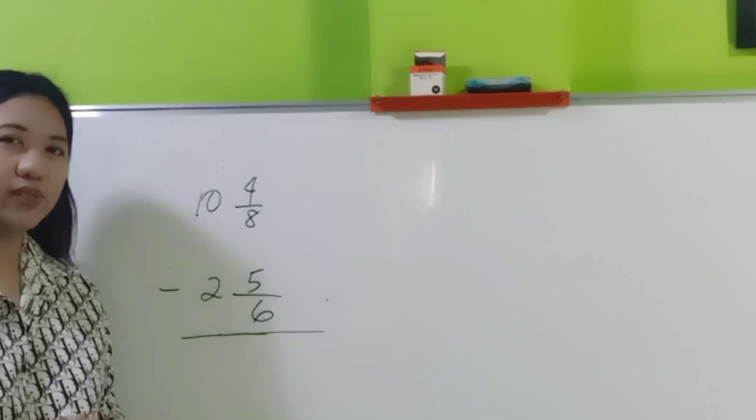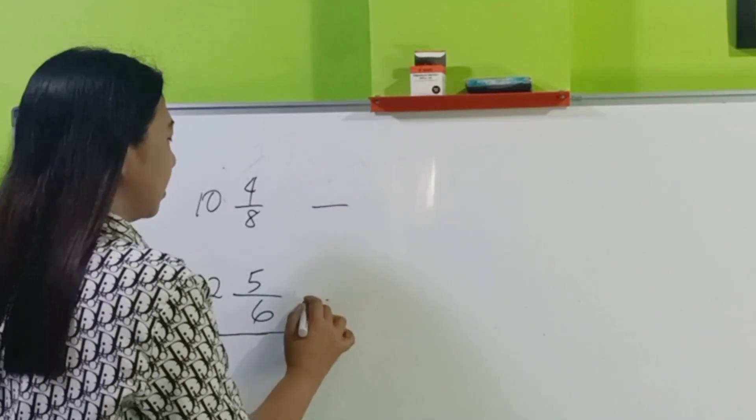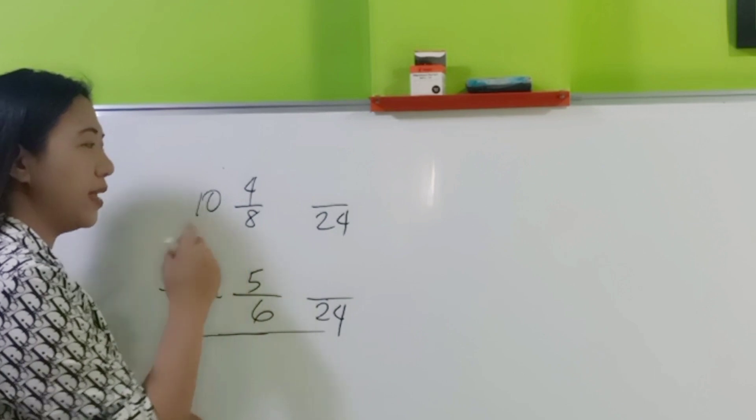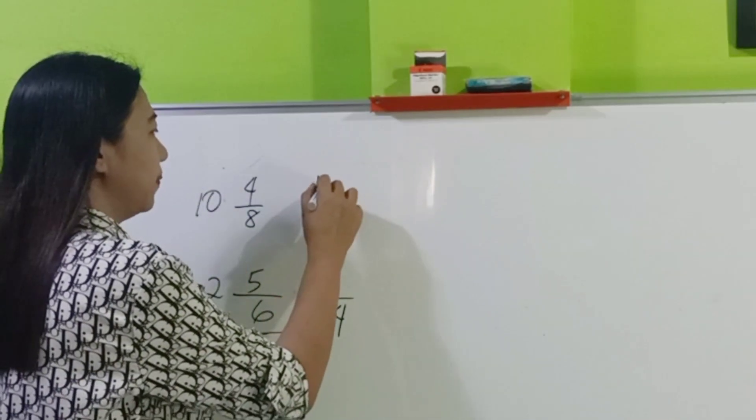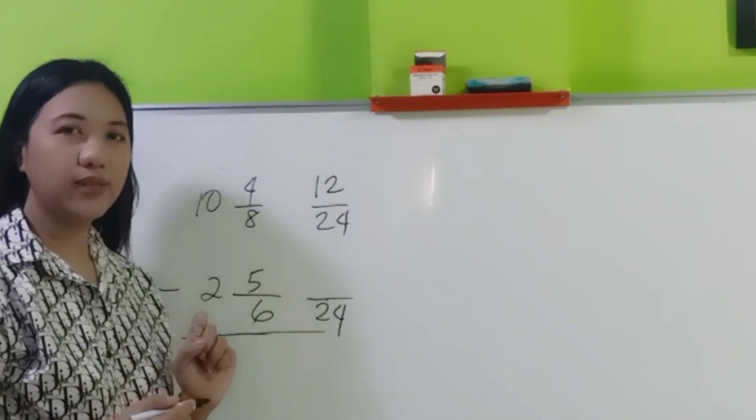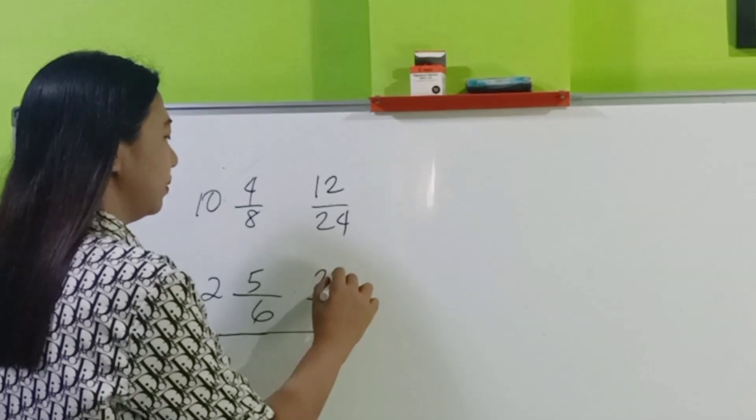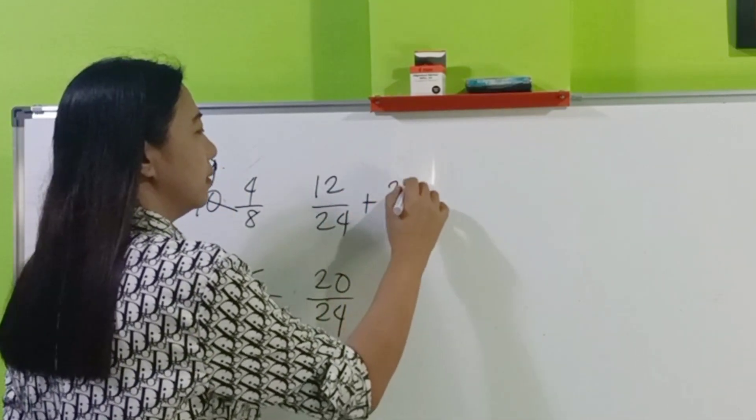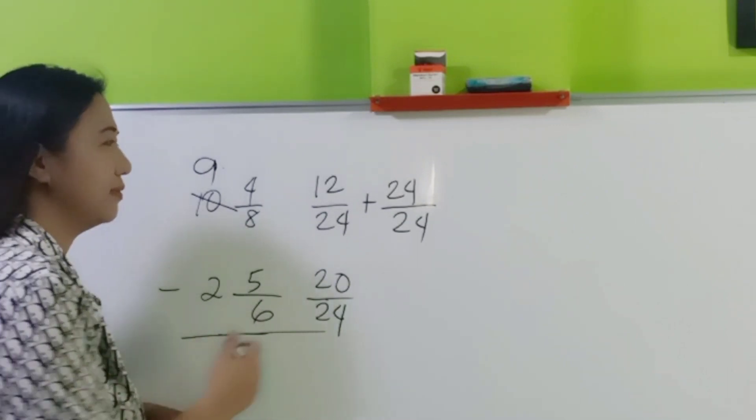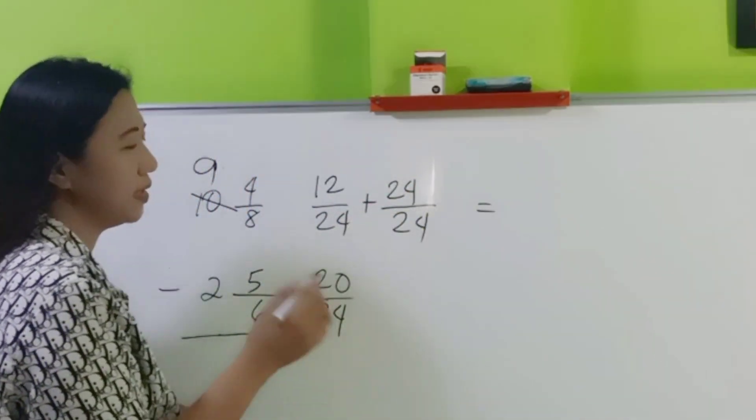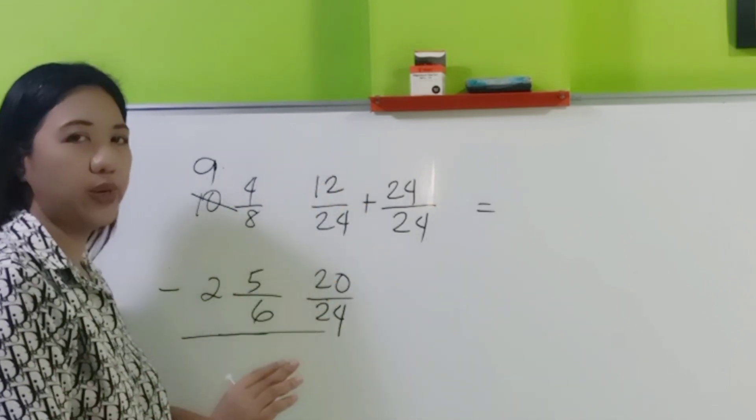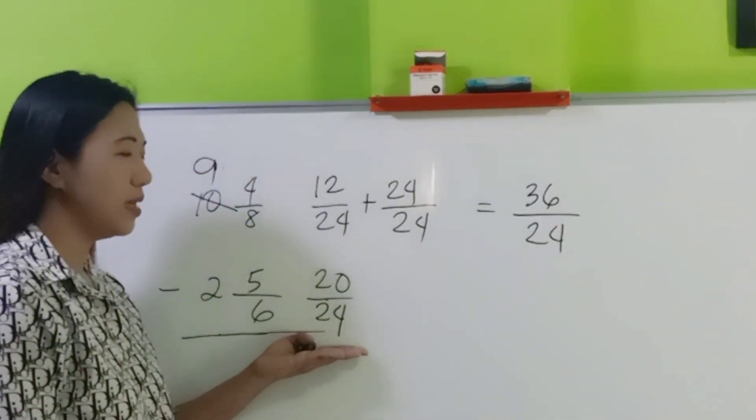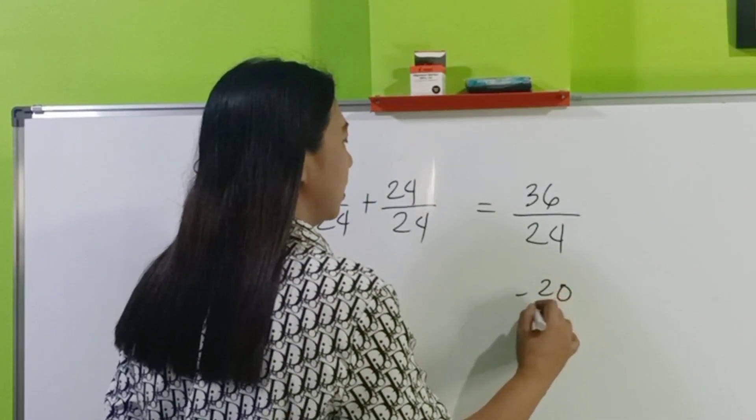So welcome back. Are you now ready for the solution? So what's the LCD of 8 and 6? LCD is 24. 24 divided by 8, 3 times 4 is 12. 24 divided by 6, 4 times 5 is 20. Next step, borrow 1. And then, add the whole number in the form of a fraction. Next, add the numerators and then copy the common denominator. 12 plus 24 is 36 over 24. And then, copy the subtrahend. Minus 20 over 24.